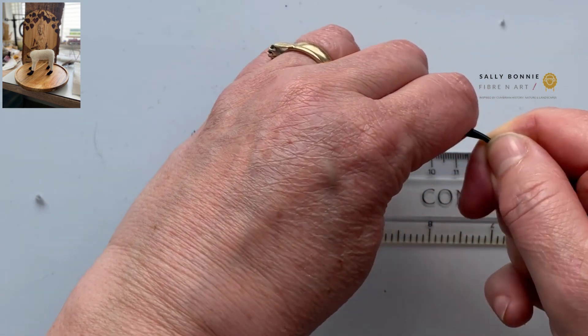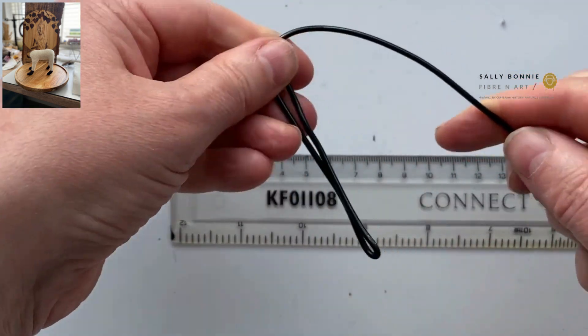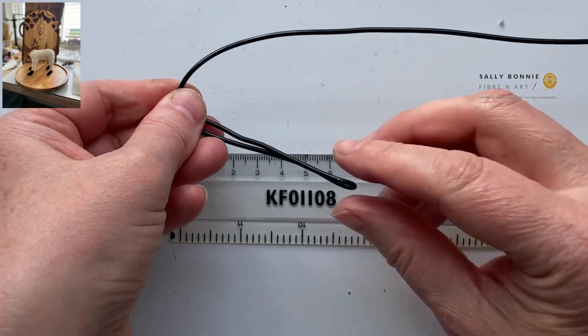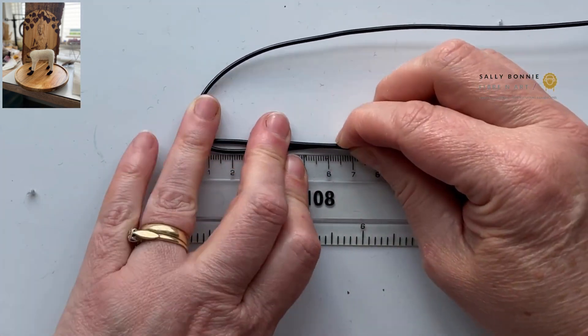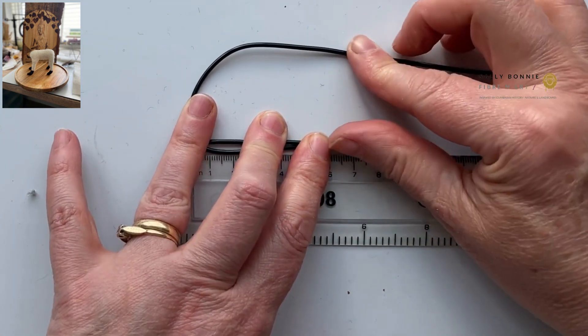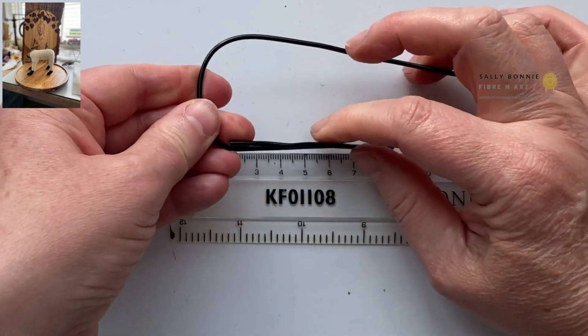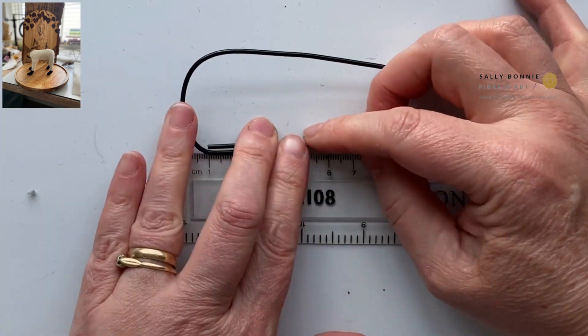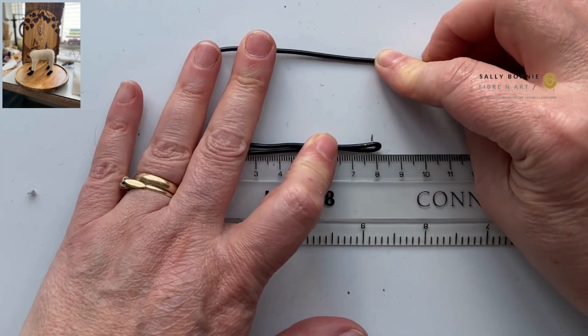So we'll do an arch going round, and then you're going to want that to be eight centimeters. So this is where I find having the ruler, I'm laying that down and I'm bringing it to there. Okay, so again, let's just get that into a shape that we're happy with and make sure that that's the eight centimeters.